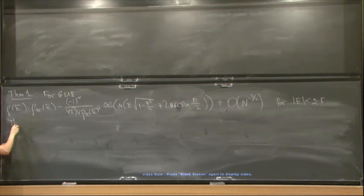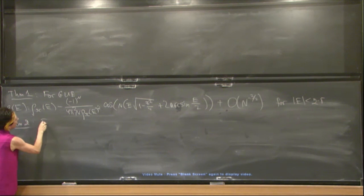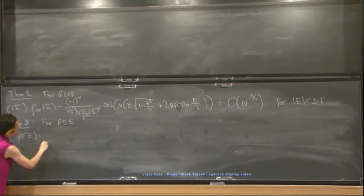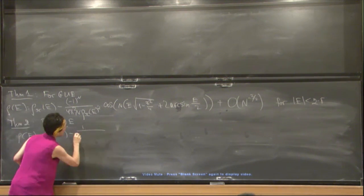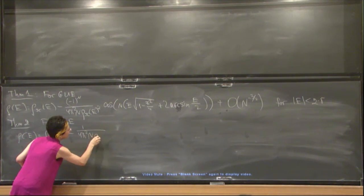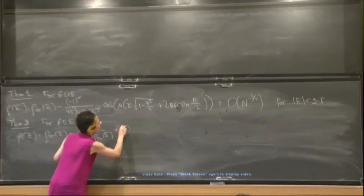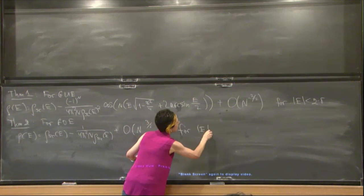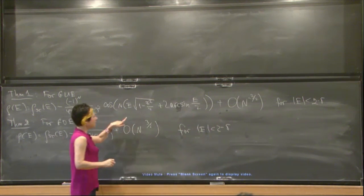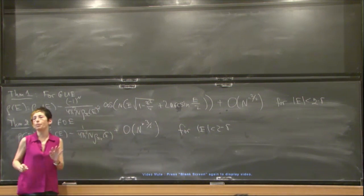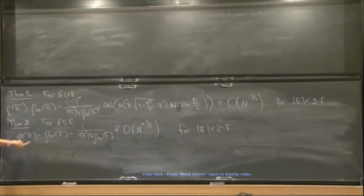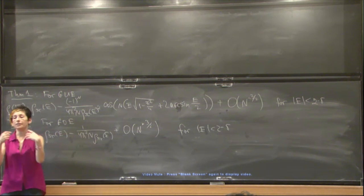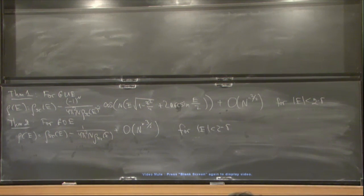The second theorem is that for the orthogonal ensemble, we have that the density of states is equal to the semicircle density minus 1 over 4π square n semicircle density plus O of n minus 3 halves, once again for E smaller than 2 minus δ, and the implicit constant in the notation here also depends only on δ. As you can see, in the orthogonal ensemble there is no oscillatory term at the correction of 1 over n, and indeed it appears only at the level of 1 over n squared correction.